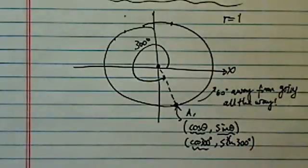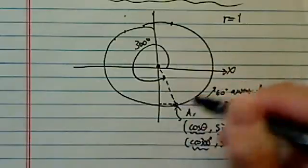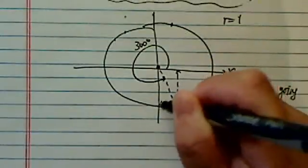In order to find sine and cosine, we're going to locate this point here. Now the easiest way to locate this point is to find the coordinates.